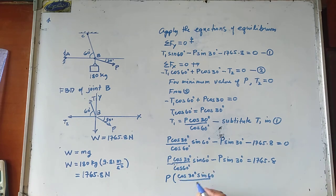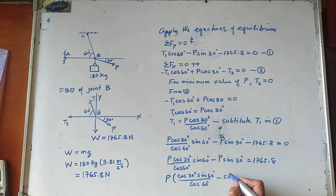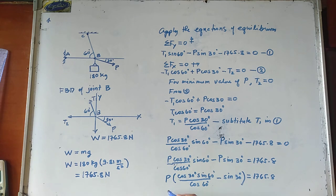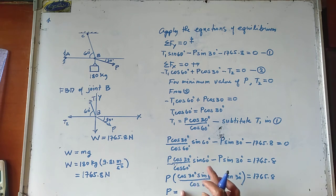We have P cosine of 30 degrees equals 1765.8. Therefore, the value of P is equal to 1765.8 divided by cosine of 30 degrees times sine of 60 degrees over cosine of 60 degrees, minus sine of 30 degrees.